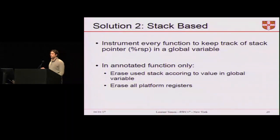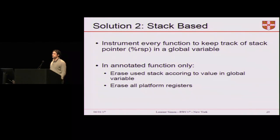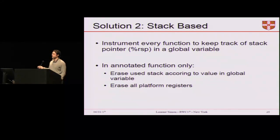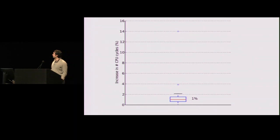So we looked at another approach. We still instrument every function in the program, but this time to track how much stack memory is being used at runtime, storing the maximum usage in a global variable. Then in functions annotated by the programmer, we erase the stack using that global variable value and erase all platform registers at once in the annotated function. This gives a significant boost — only about 1% performance overhead in practice, with some outliers.